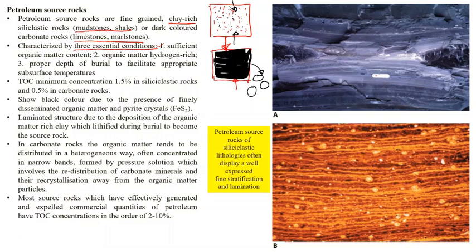Second condition: the organic matter should be hydrogen-rich so that it is movable. If the organic matter is poor in hydrogen content, it will not be labile — it will not move freely — and if the hydrocarbon is not moving freely, it will not be able to enter the reservoir. Third condition: proper depth of burial to facilitate appropriate subsurface temperature. Depending on the geothermal gradient, the depth at which sediments are located will decide whether they are in the oil window, gas window, or the biogenic methane zone.